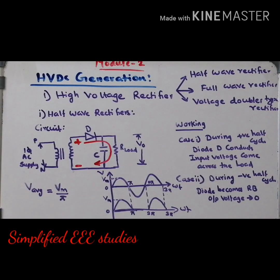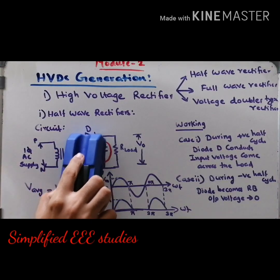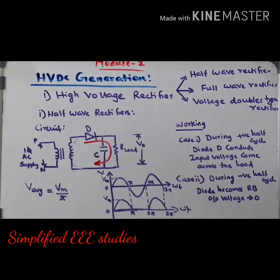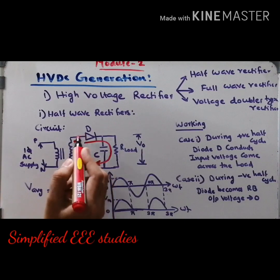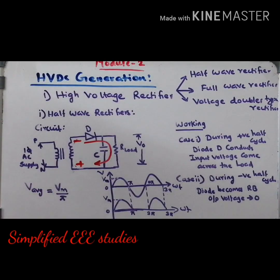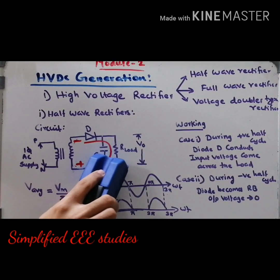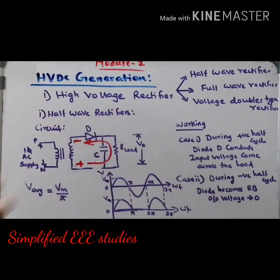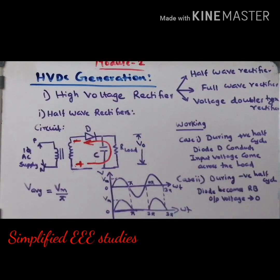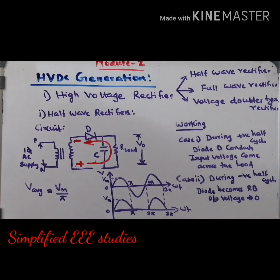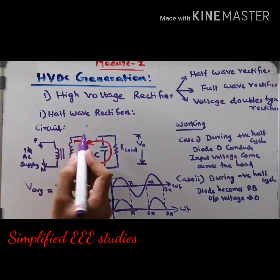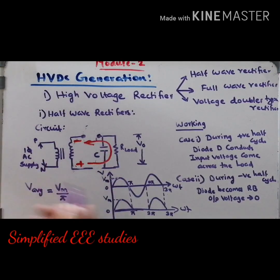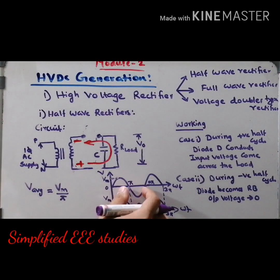Similarly, during the negative half-cycle — marking it as negative with respect to positive — the direction of current changes. The direction will be from positive to negative. Whether the diode will conduct? No, the diode will not operate because it is getting reverse biased. That means the diode becomes just like an open circuit — no conduction. So output voltage becomes zero during the negative half-cycle. This type of rectifier is known as the half-wave rectifier.